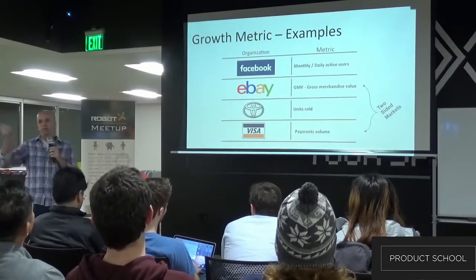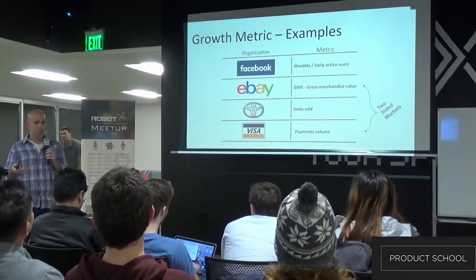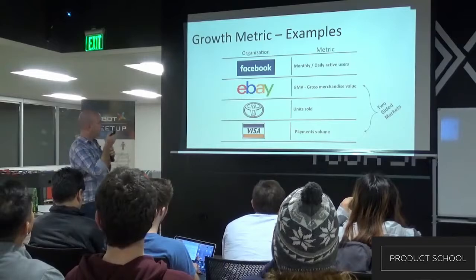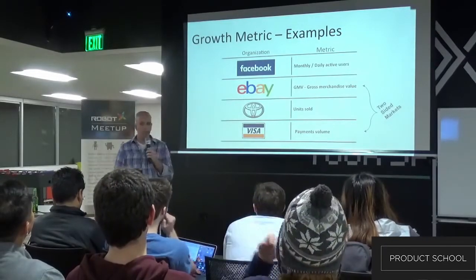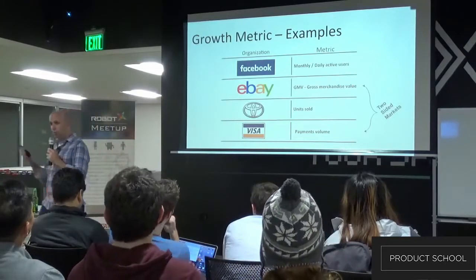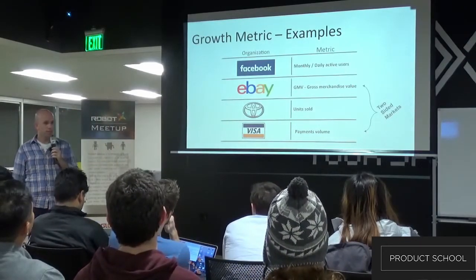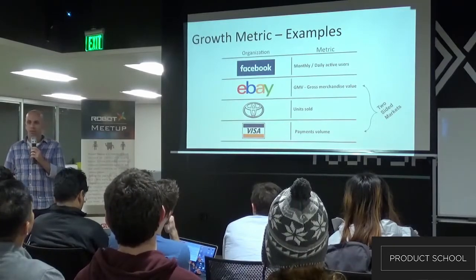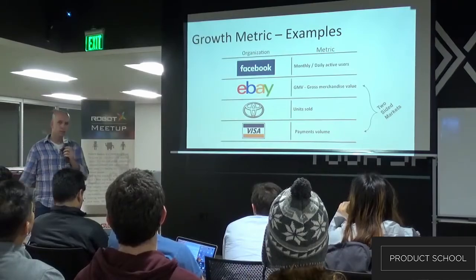You don't want to have multiple growth metrics — you want to have one growth metric. So obviously, for eBay, if they grow the GMV, it means that they're growing both kinds of users: buyers and sellers. And the same thing applies for Visa. So the growth metric is not always in terms of users, or units sold, or things like that.